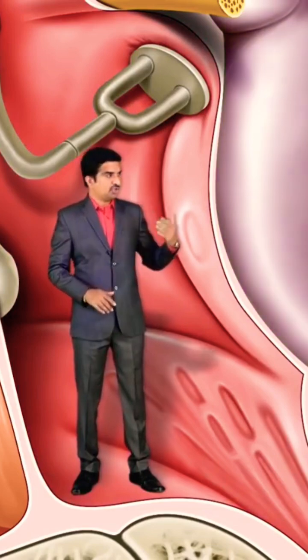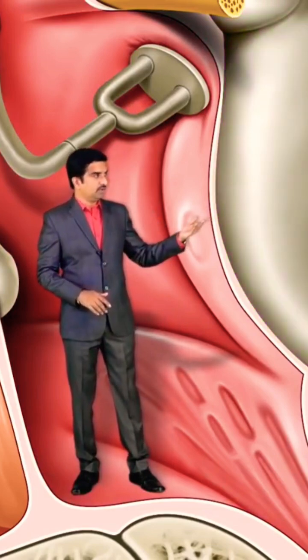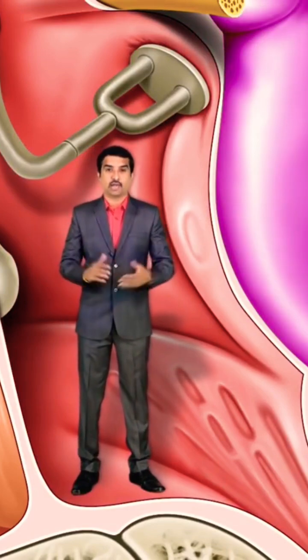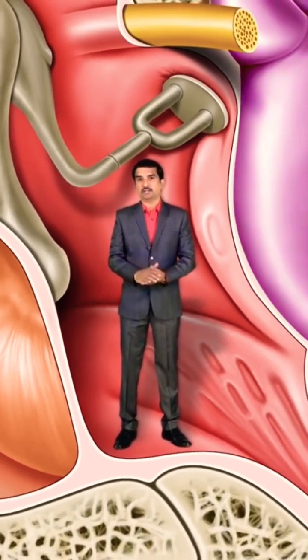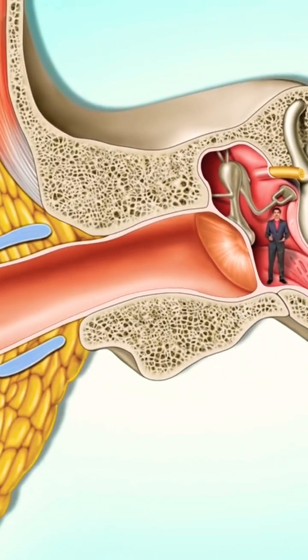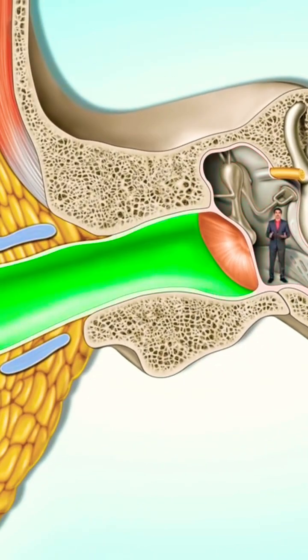And the final structure of the ear is the inner ear. So the ear is divided into three parts: the outer, middle, and the inner ear.